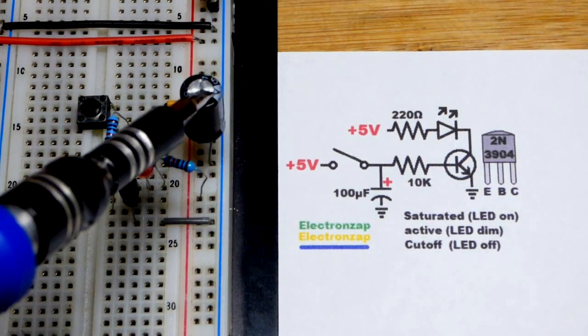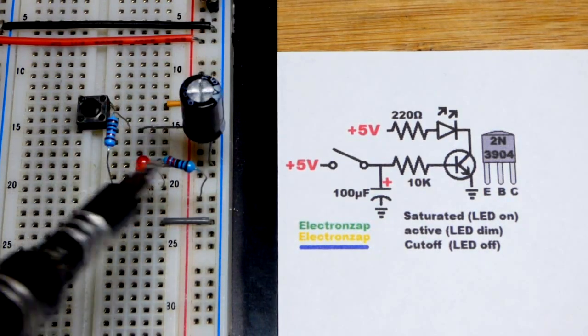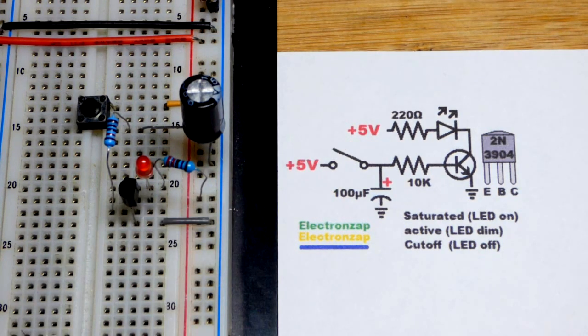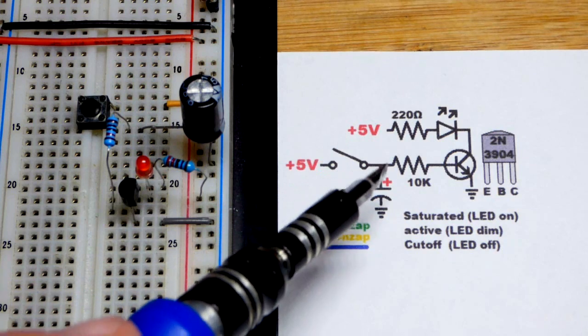In a previous video we looked at using a capacitor directly to keep an LED lit for a brief period of time when you remove the switch. It was very fast and didn't last very long.